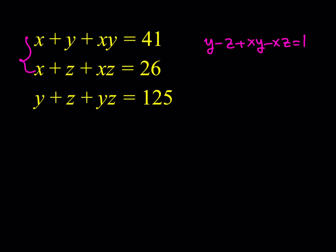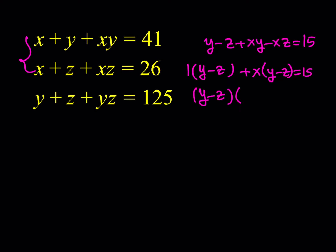You can factor that result by grouping: y minus z plus xy minus xz factors as (y minus z)(1 plus x), or written in standard form (x plus 1)(y minus z) equals 15. You can do the same thing with the second and third equations and so on. That approach should get you somewhere, though I haven't fully worked it through. That's one way to approach it.